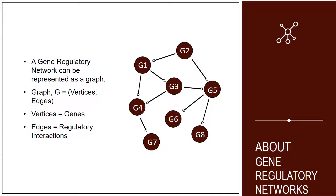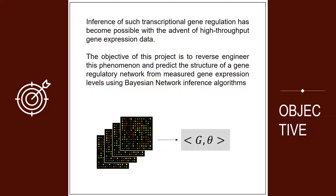Such a network can be easily modeled using a graph where the vertices denote the genes and the edges represent the interaction between the genes. The objective of the project is to reverse engineer this phenomenon and find the regulatory network using the observed gene expression data.